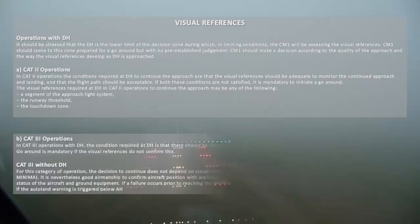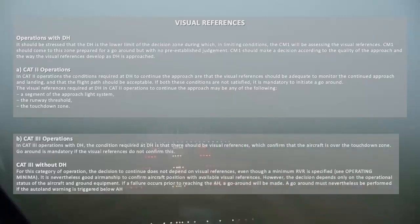CAT 3 Operations: In CAT 3 Operations with Decision Height, the condition required at Decision Height is that there should be visual references which confirm that the aircraft is over the touchdown zone.